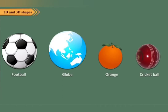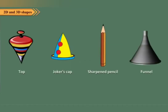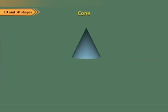Now take a look at the shapes of the objects shown here — each one has the shape of a sphere. A sphere has one curved face, no vertex, and no edge. Now look at these familiar objects — all these objects have the shape of a cone. A cone has one vertex and one curved edge. It has two faces: one curved face and one flat face.